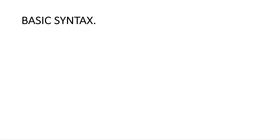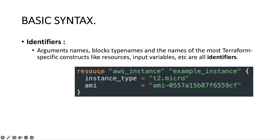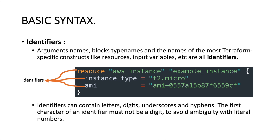Next we have identifiers. Argument names, block type names, and the names of most Terraform-specific constructs like resources and input variables — all of these we call identifiers. Here, 'resource', 'instance_type', and 'ami' are all identifiers. These are specific to Terraform and you have to make sure you're using the same identifiers to create the components. Identifiers can contain letters, digits, underscores, and hyphens. The first character of an identifier must not be a digit, to avoid ambiguity with literal numbers.